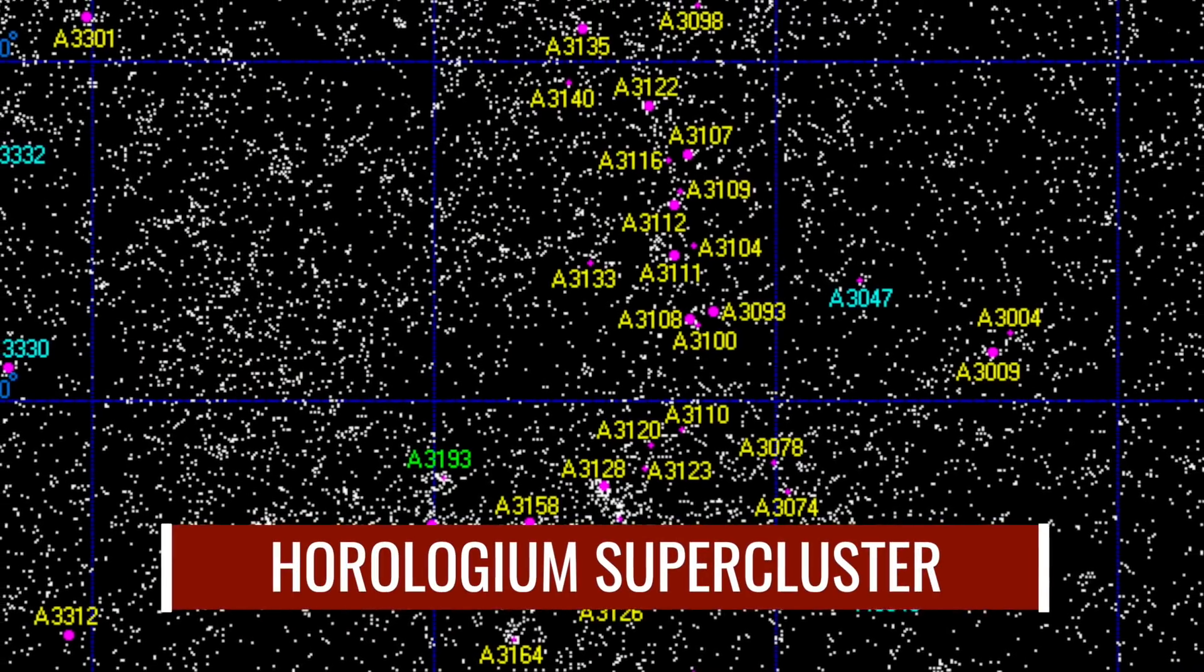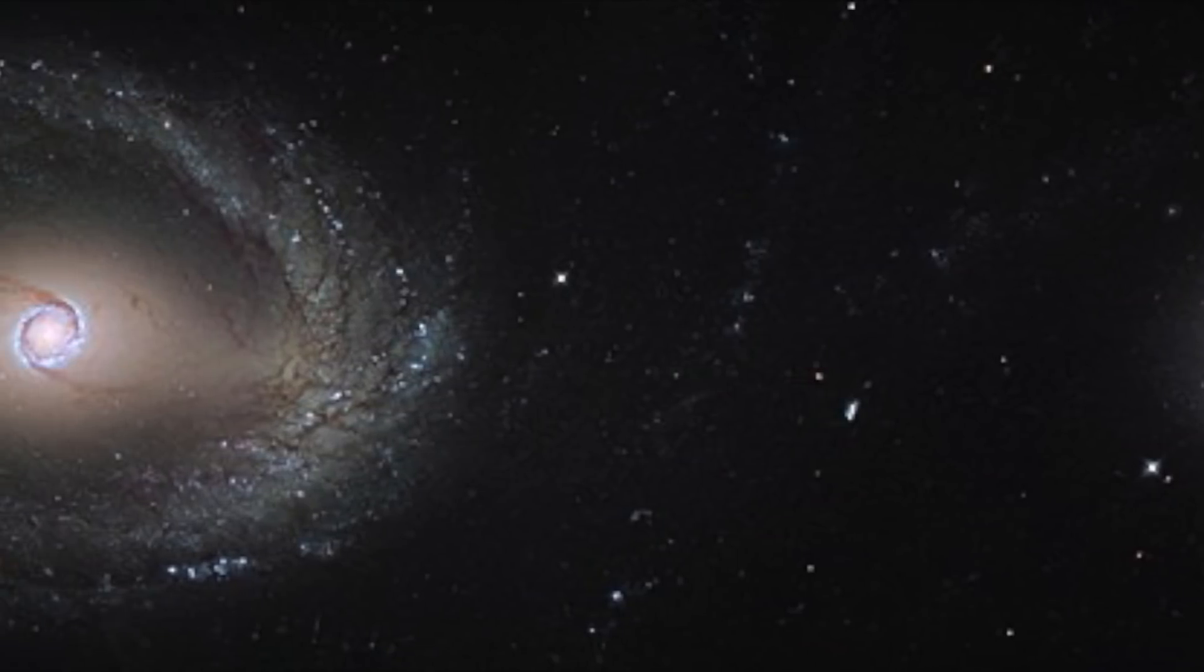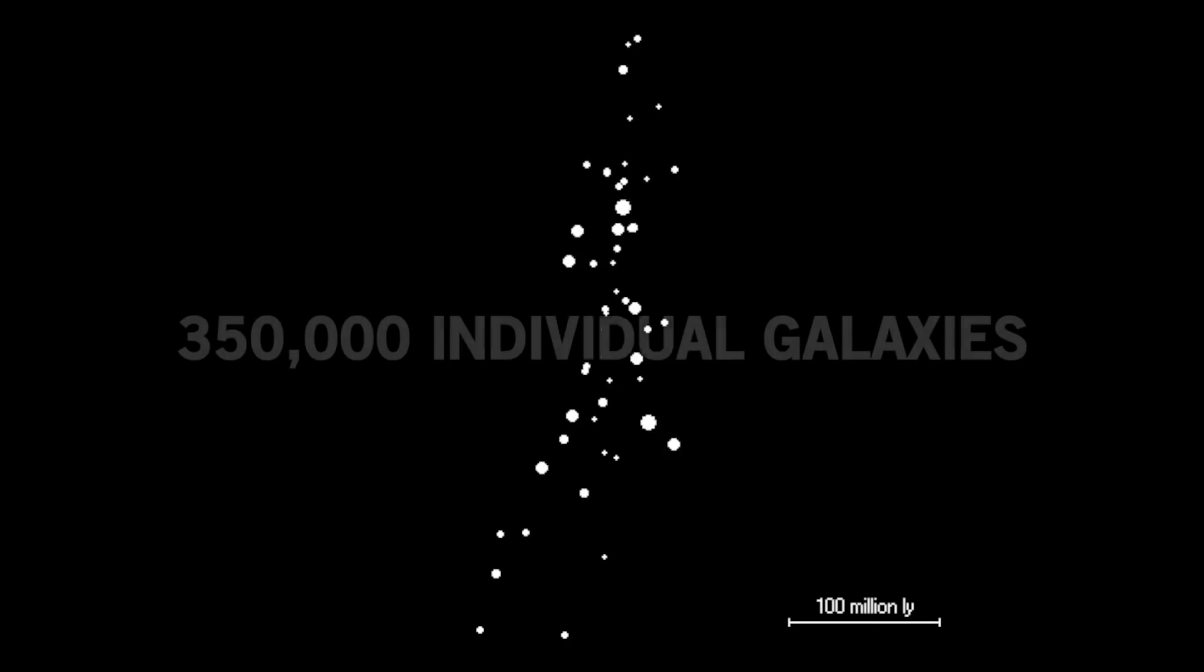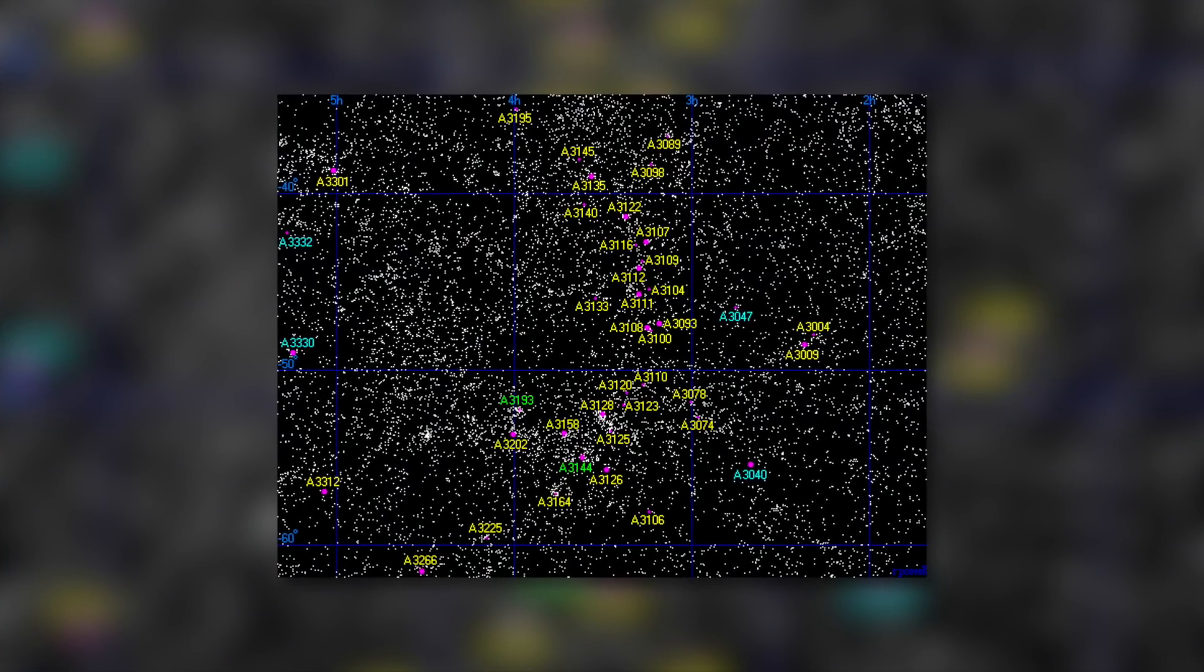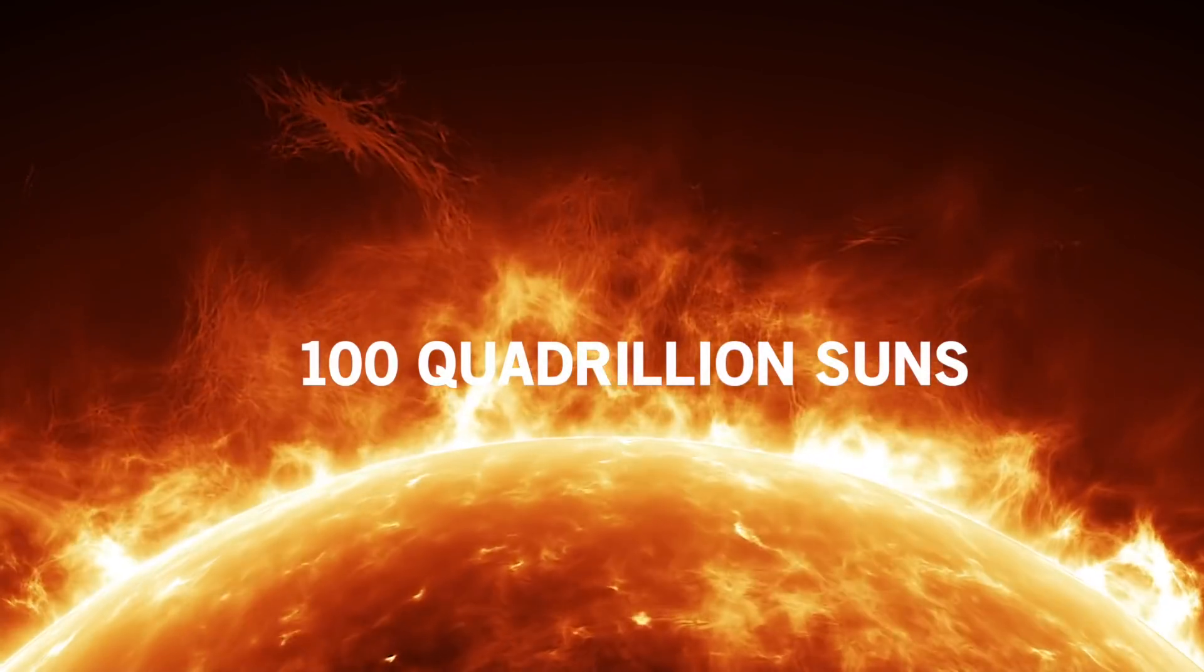Horologym supercluster. The Horologym supercluster shows us once again how diverse and extraordinary the different systems in space can be. This extraordinarily large structure is a collection of over 350,000 individual galaxies that coexist in dense space. The Horologym supercluster is located between 700 million and 1.2 billion light-years away from our Earth. The accumulation of the different galaxies has a diameter of 550 million light-years and has a total mass of 100 quadrillion suns.